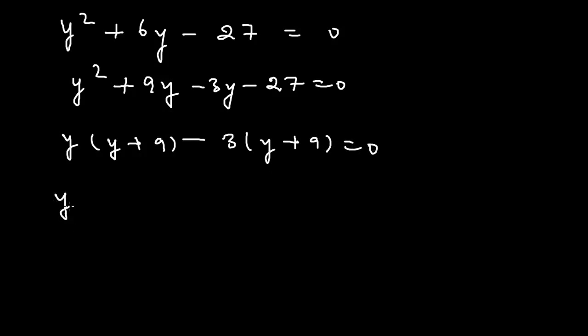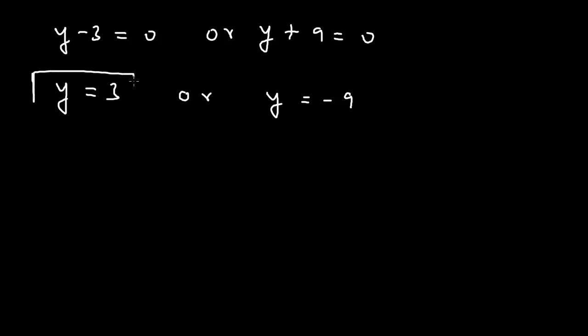And this equals (Y - 3) equals 0 or (Y + 9) equals 0. This means Y equals 3 or Y equals minus 9. Therefore the value of Y is equals to 3 or Y is equals to minus 9.